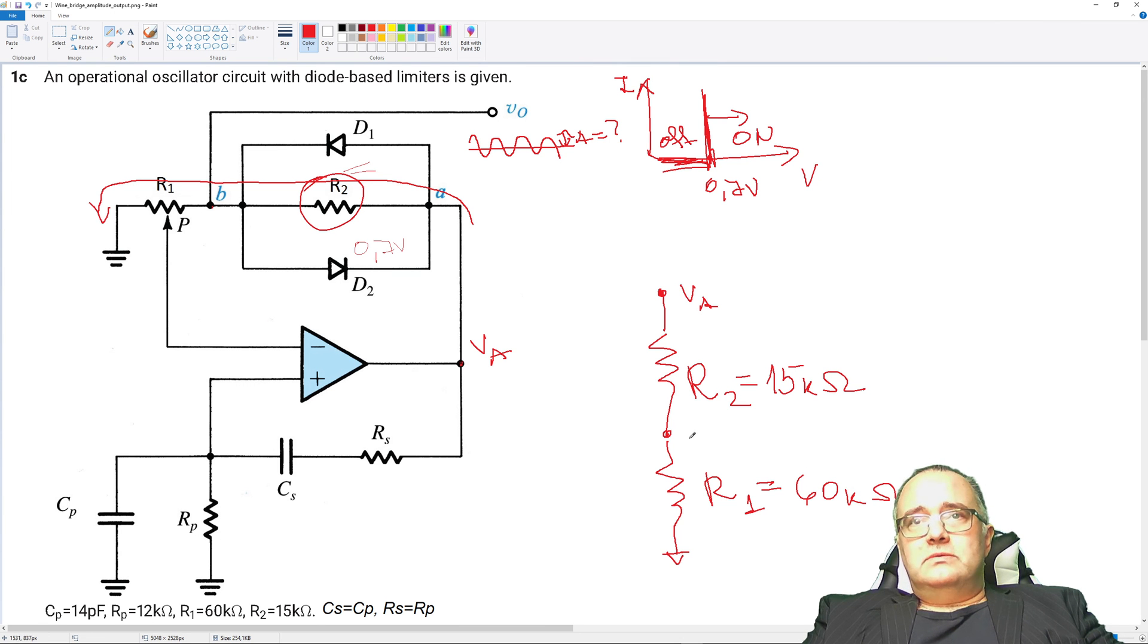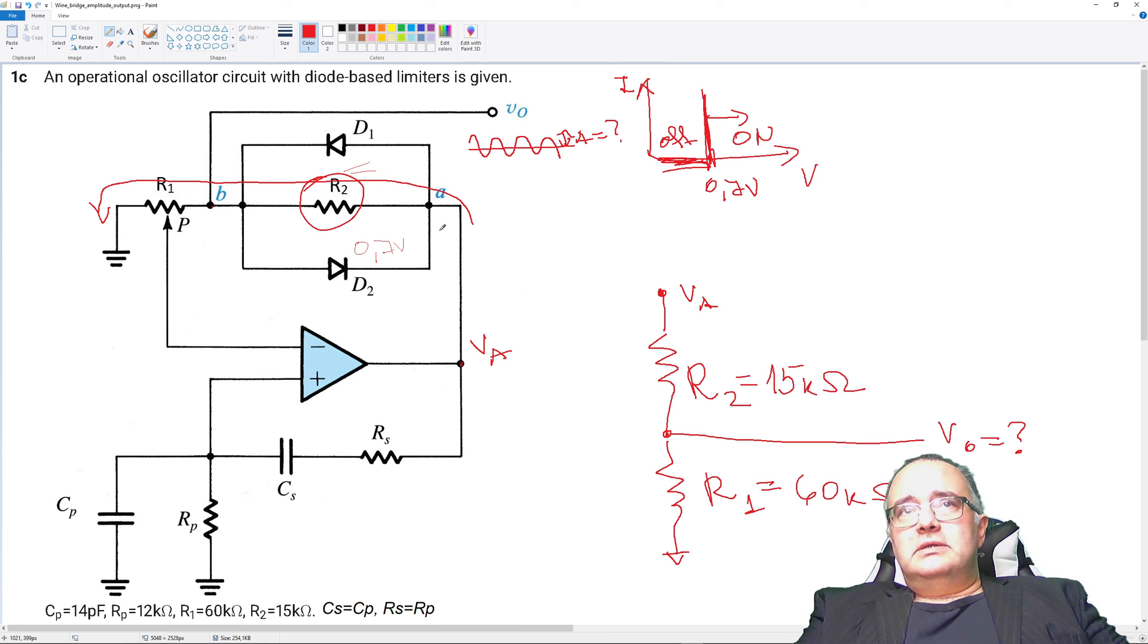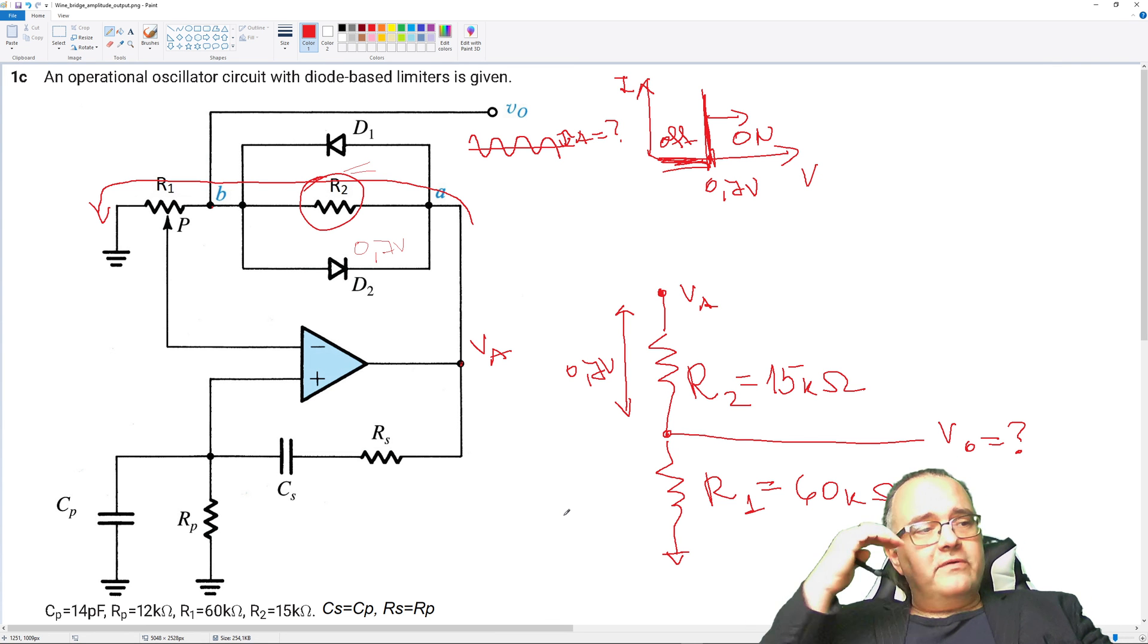Now this is a resistor divider. We know that the diodes will activate when the voltage drop across the diodes becomes 0.7 volts. So if this is 0.7 volts, then the diodes will activate and this will be the level at which the amplitude will be set.